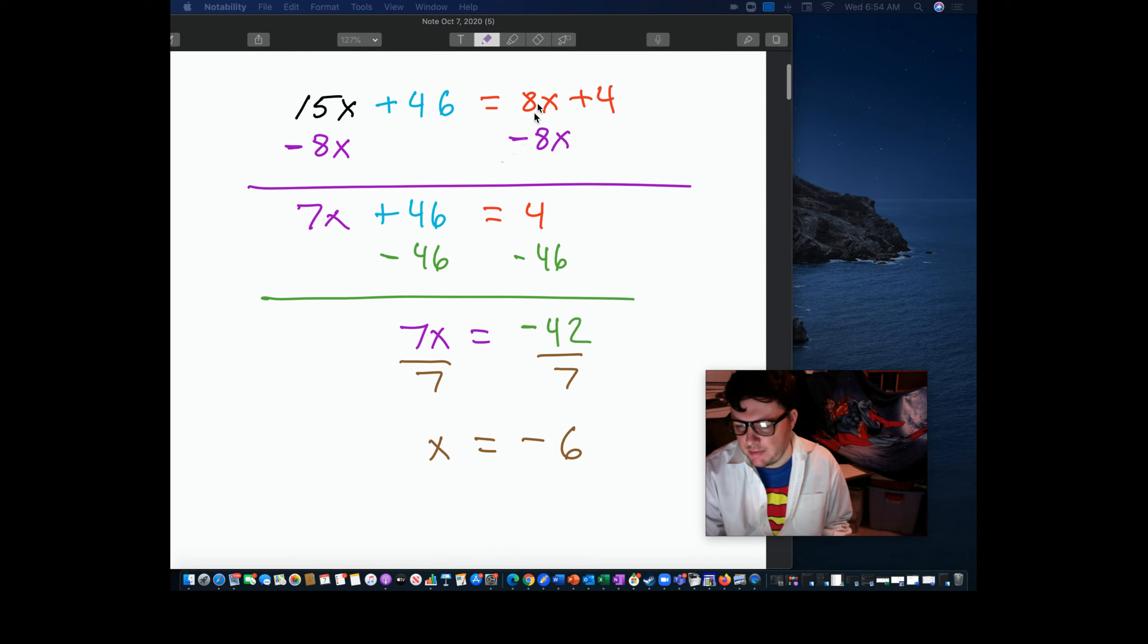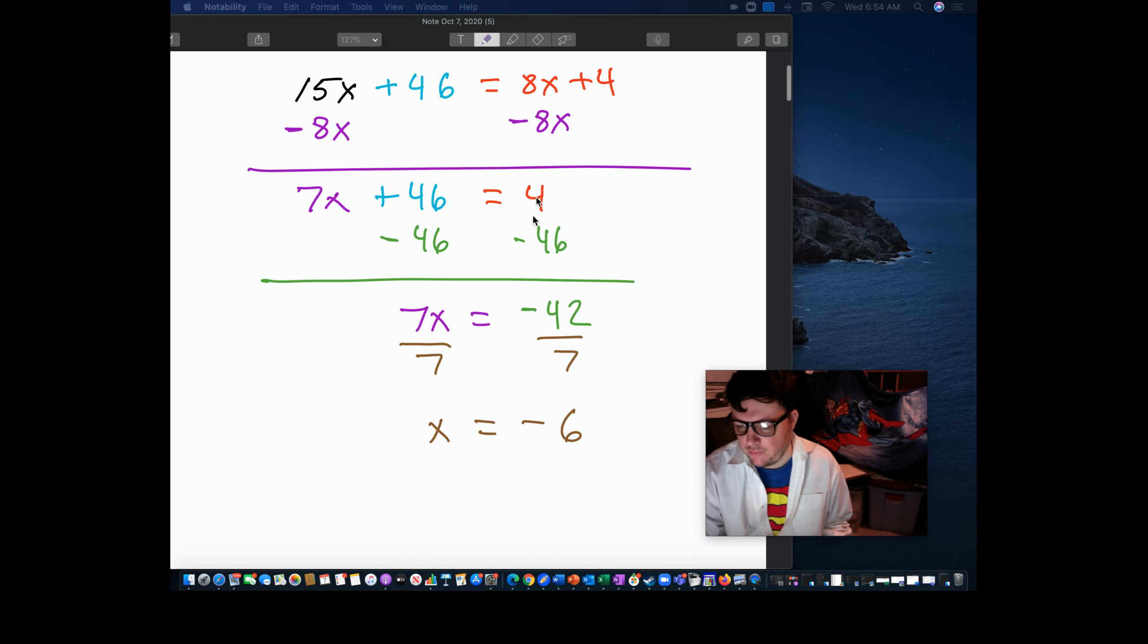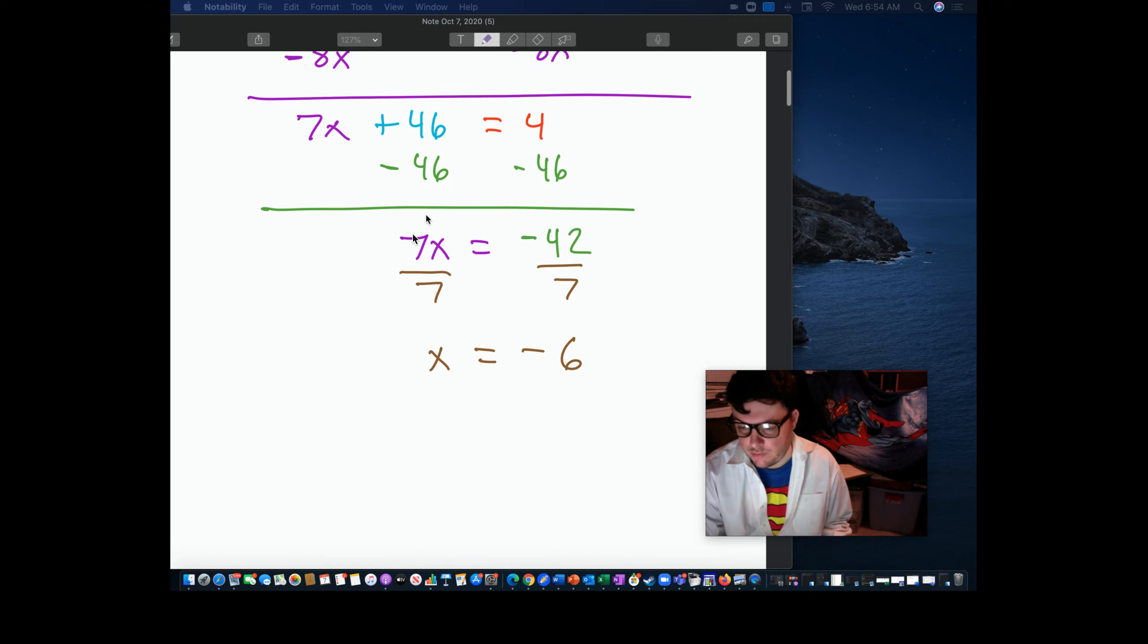Next line, what do we do? We see 8x here. We see 15x. I want to put my x's together. So I subtract 8x from both sides. I get 7x plus 46 equals 4. Then I notice I have my 46 as a number and 4 as a number. So I want to put those together. Those are called constants. So we'll subtract 46, opposite addition and subtraction. And I'll get 4 minus 46, which is negative 42.